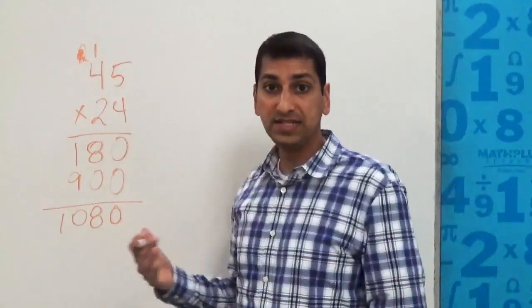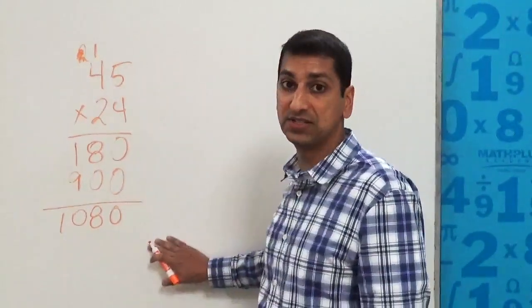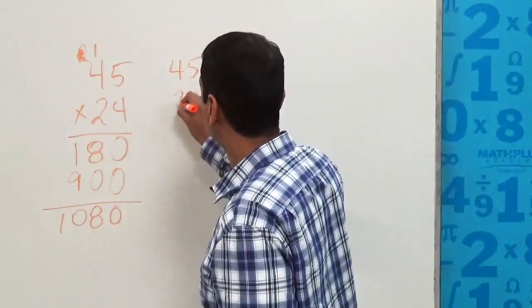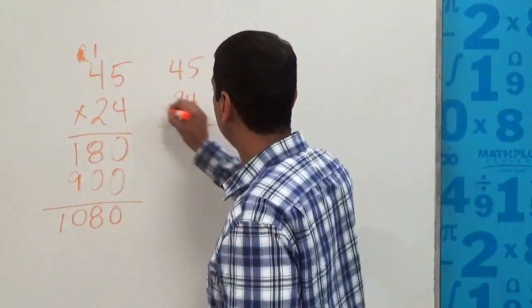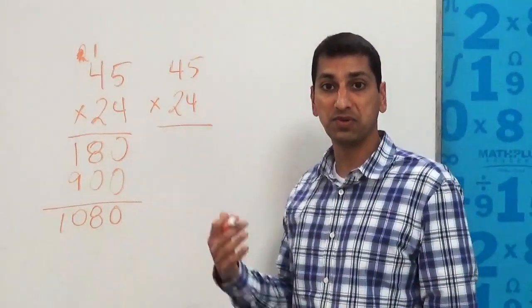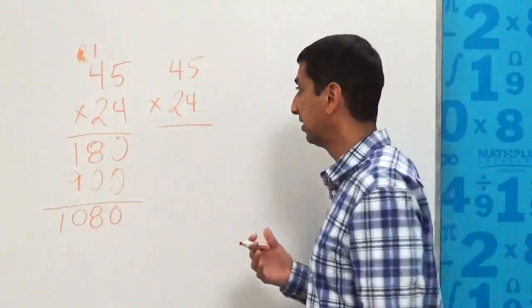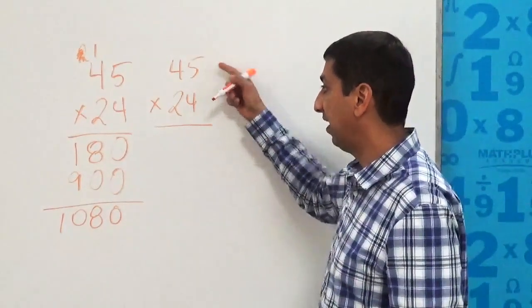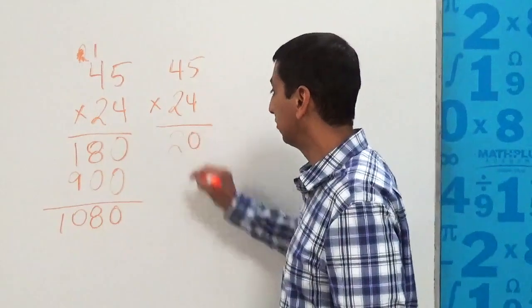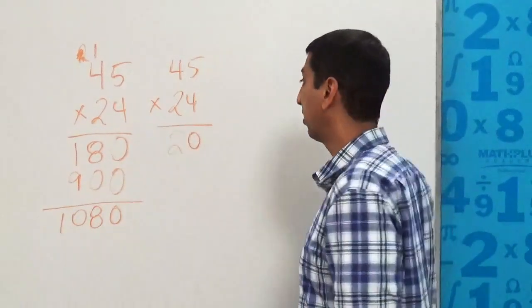Now, these days, before we teach kids the standard algorithm, we might teach them what's called partial products. We're going to help them see what's going on with place value in these problems. So again, we'll start with four times five, which is 20, and we'll just go ahead and write that whole thing right here, 20. That's the first part of the problem.